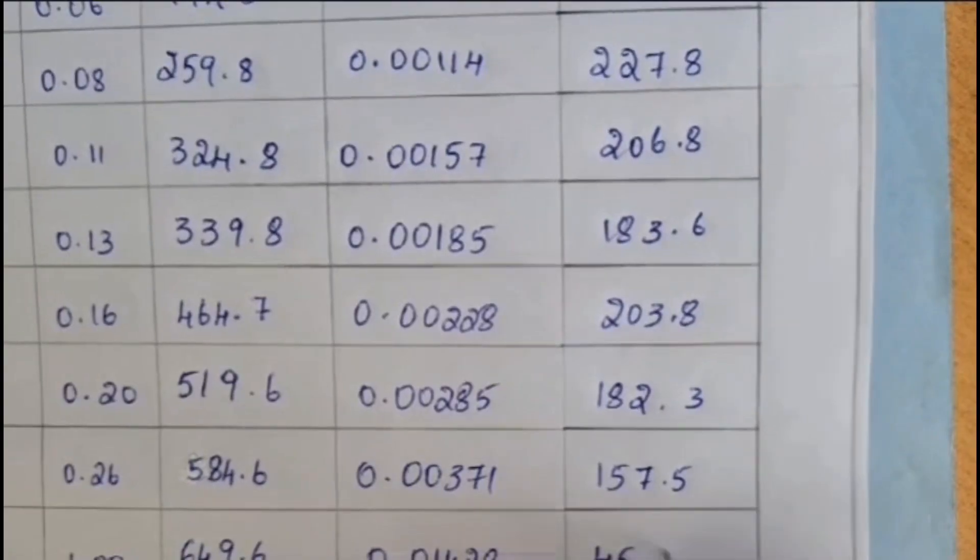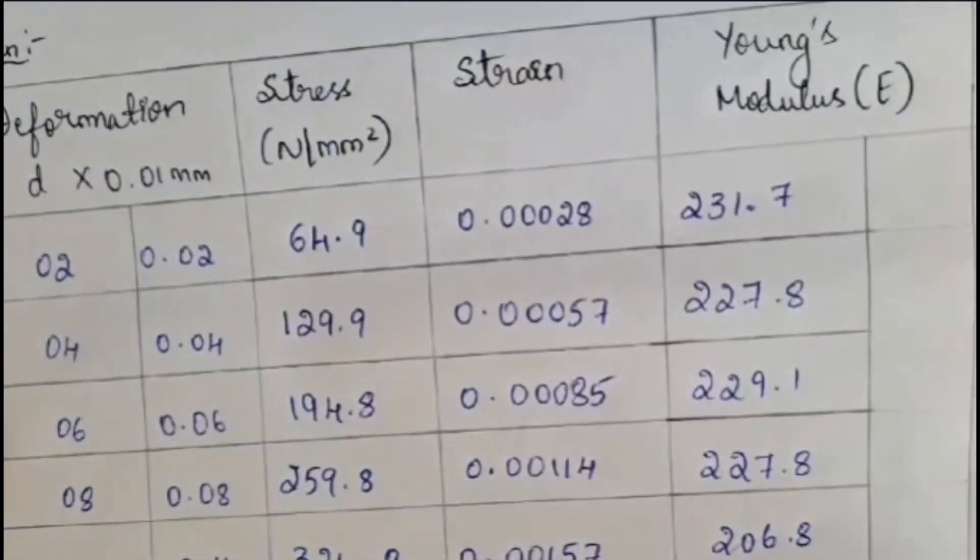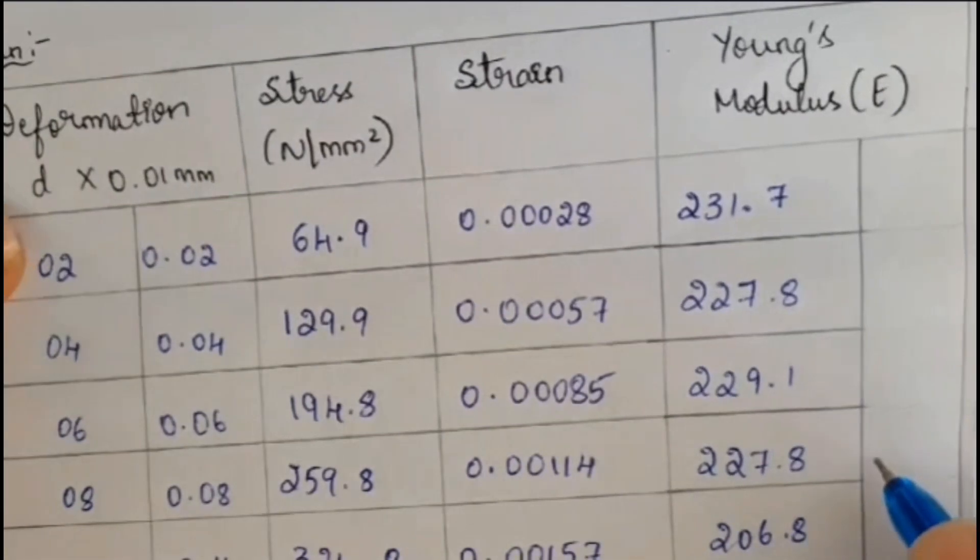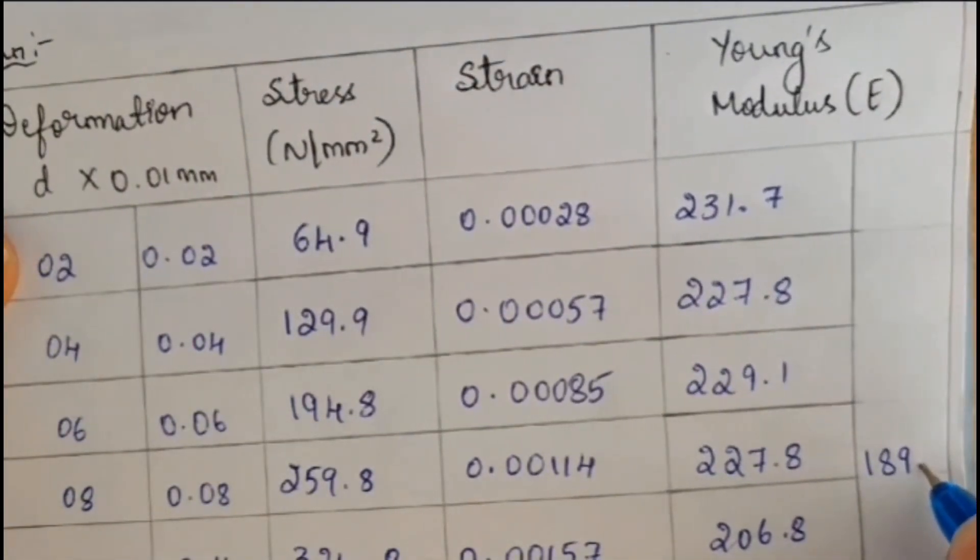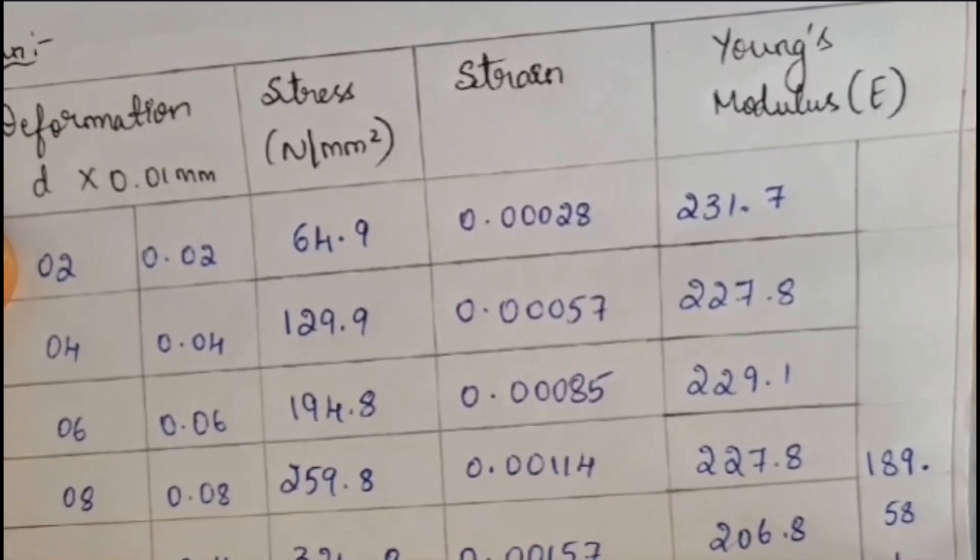So at last I have to calculate. I have to add all the 10 values and divide by 10. At last I will be getting as 189.58. You have to add everything. I mean each individual Young's modulus. And you have to divide it by 10. So you will be getting around 189.58. This is your final answer. So this much you have to write down. Later on you have to write the final conclusion. This completes your tension test.